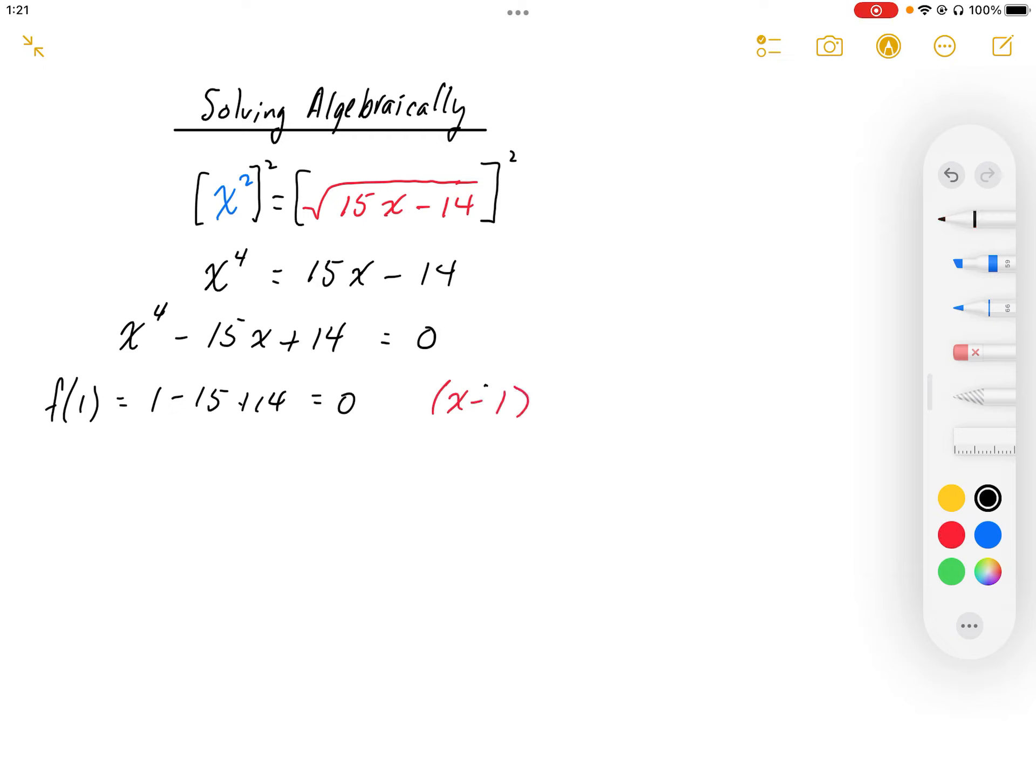And I can guess the negative, but because of the nature of this fourth-degree polynomial, since it started off with a square root, we know that the x values must be positive. So I'm going to guess x is 2.